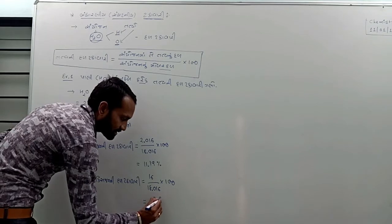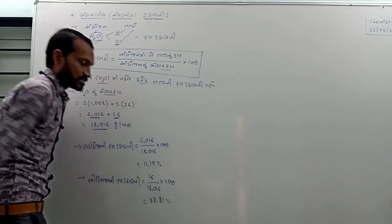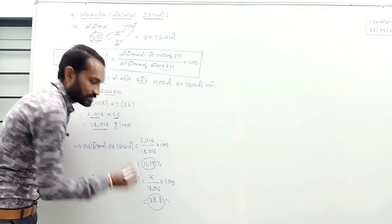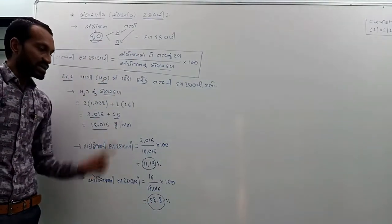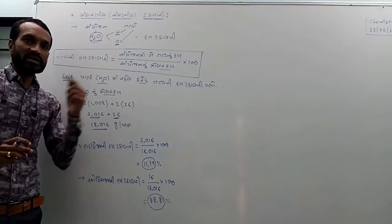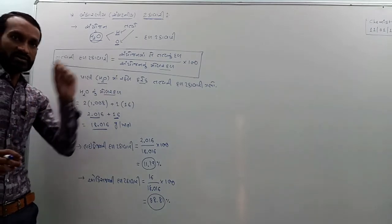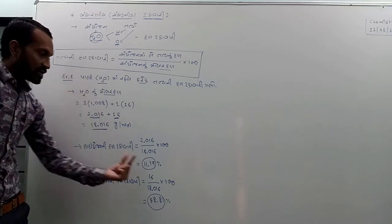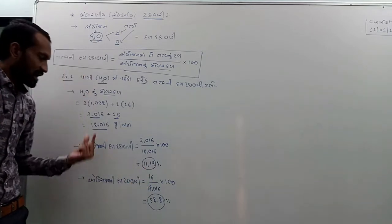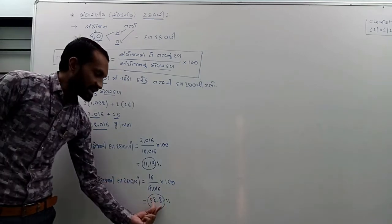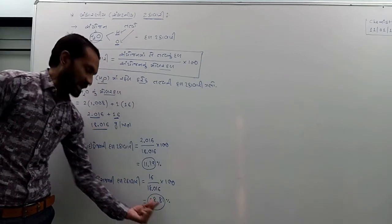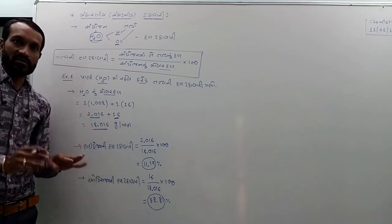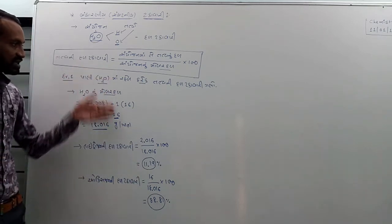If you have 100 grams of water, there are 2 grams. If you have 100 grams of water, then there is 10.21 grams of hydrogen and 8.81 grams of oxygen.